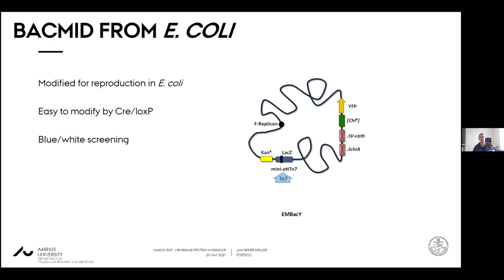Coming to the systems mostly in use nowadays, there are basically two systems. The first is the BACMID-derived system, where the BACMID is a modified virus genome able to be replicated in E. coli cells. The Baculovirus has been modified with E. coli genes such as antibiotic resistance and the lacZ gene, where you can integrate your gene of interest, thereby disrupting the lacZ protein, and do blue-white screening to see if your gene of interest has been integrated into the Baculovirus. Then you transfect this and generate virus from it.